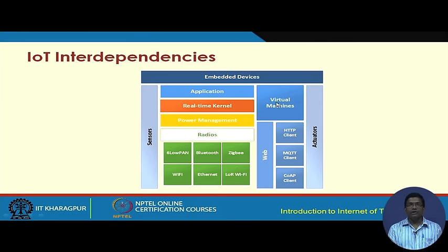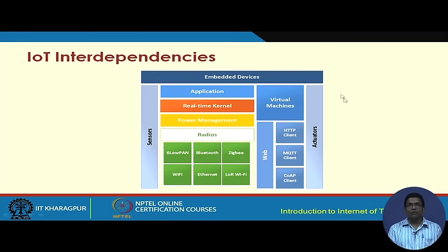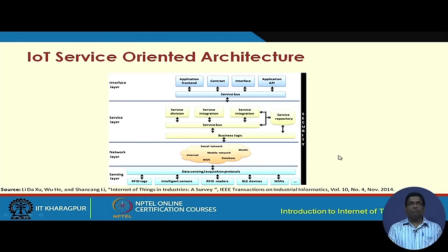Alongside, we have virtual machines that take care of virtualization of the nodes. We also have different application-level protocols such as HTTP client, MQTT client, and CoAP client — which will be discussed in subsequent lectures. Finally, we have actuators. So sensors, applications, operating system, power management, radios, virtual machines, web protocols, and actuators together form the embedded devices of IoT.